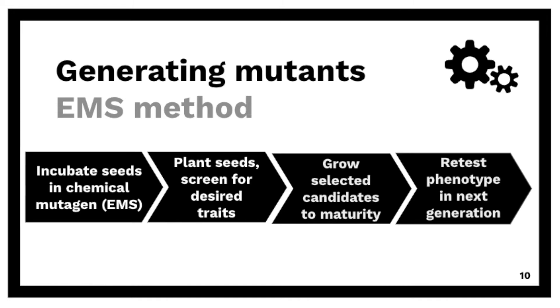First, we would incubate the seeds in the chemical mutagen, then we would plant the seeds and screen for desired traits. Finally, we would grow the selected candidates to maturity, and then retest the phenotype in the next generation.